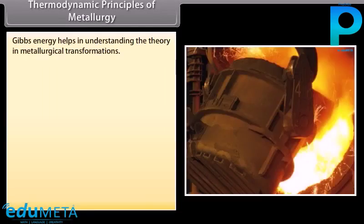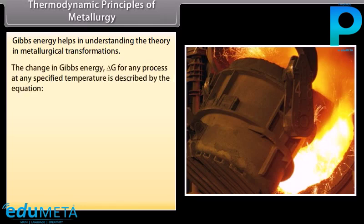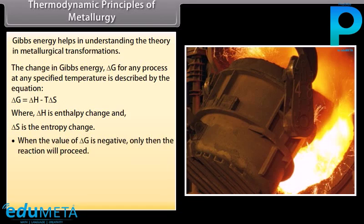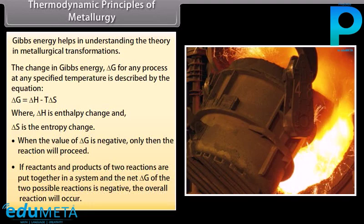Thermodynamic principles of metallurgy: Gibbs energy helps in understanding the theory of metallurgical transformations. The change in Gibbs energy, ΔG, for any process at a specified temperature is described by the equation: ΔG = ΔH − TΔS, where ΔH is enthalpy change and ΔS is entropy change. When the value of ΔG is negative, only then will the reaction proceed. If the net ΔG of two possible reactions is negative, the overall reaction will occur.